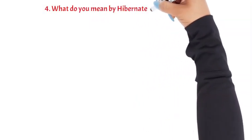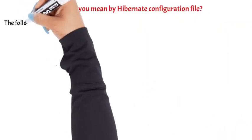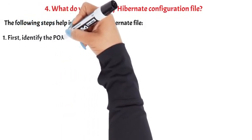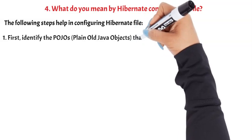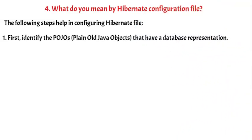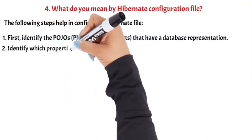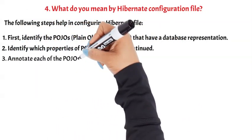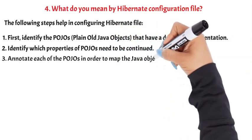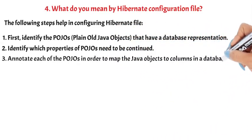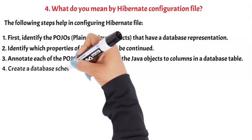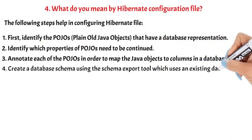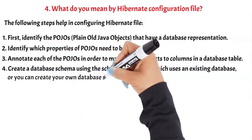Question 4: What do you mean by Hibernate configuration file? The following steps help in configuring the Hibernate file. First, identify the POJOs (Plain Old Java Objects) that have a database representation. Second, identify which properties of POJOs need to be persisted. Third, annotate each of the POJOs in order to map the Java objects to columns in a database table. Fourth, create a database schema using the Schema Export tool which uses an existing database, or you can create your own database schema.